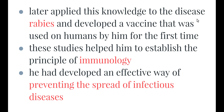Pasteur later applied this knowledge to rabies, and it was actually the first vaccine to be used on humans. He helped to prevent vaccinated people from contracting rabies, having a massive impact on health and wellbeing. These studies helped him to establish the principle of immunology — linking the immune response to disease.